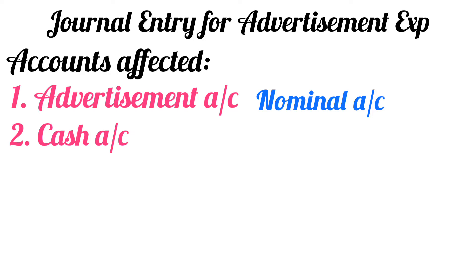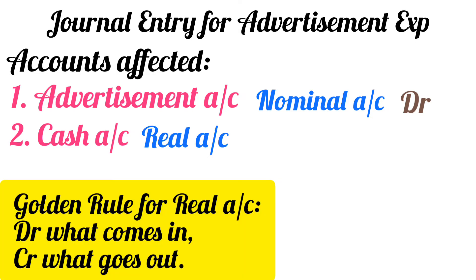The golden rule for nominal accounts says: debit all expenses and losses, credit all incomes and gains. Since advertisement is an expense, advertisement account will be debited. Cash account is a real account, and the golden rule for real accounts is: debit what comes in, credit what goes out.